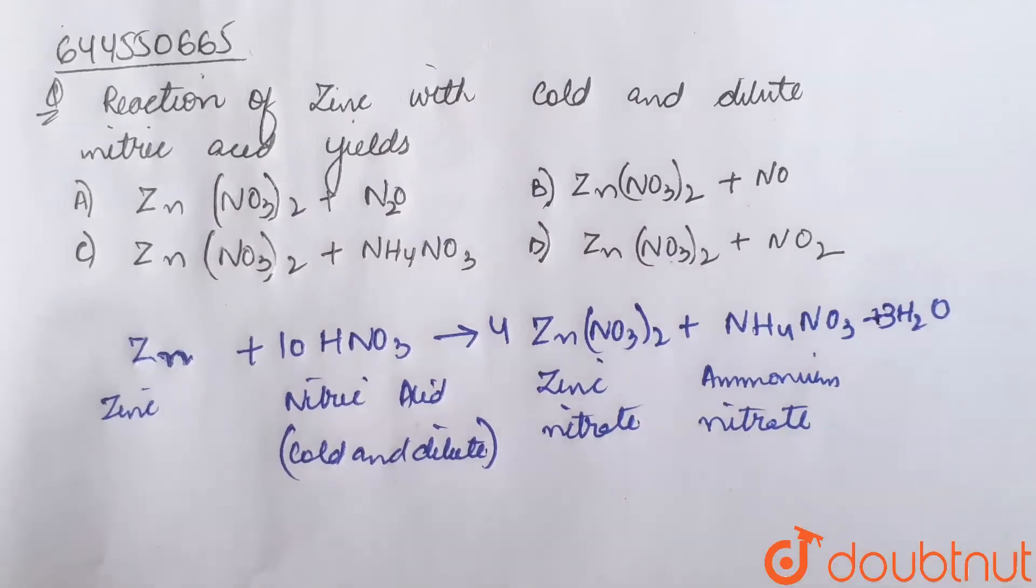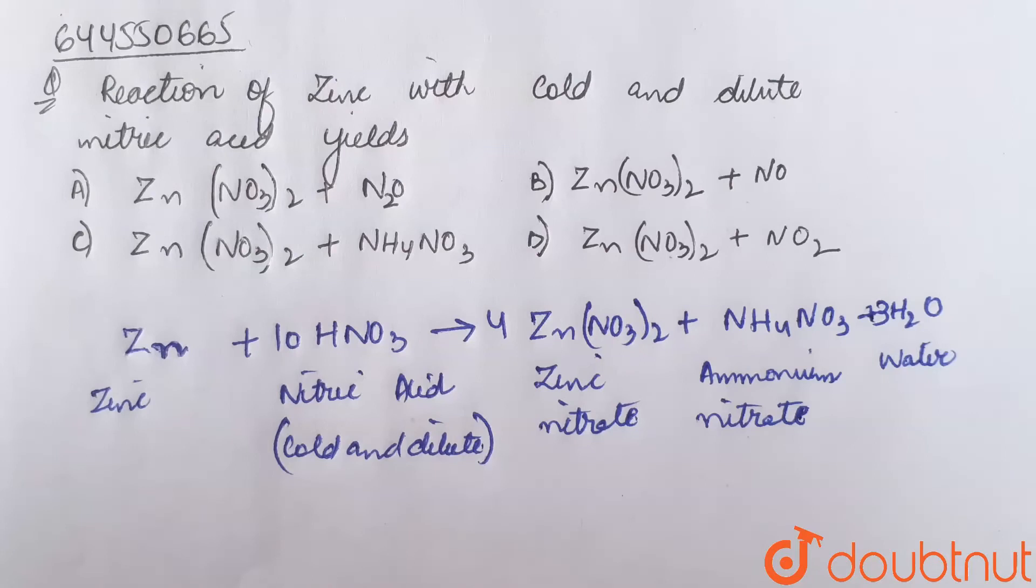So the correct option for the given question is option C: Zn(NO3)2 plus NH4NO3.